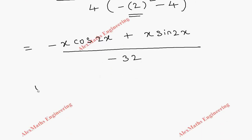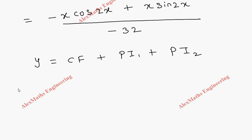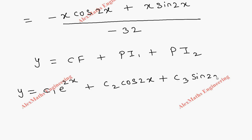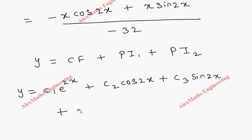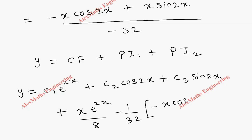Now we combine the complementary function and both particular integrals for the complete solution. The CF is c1 e power 2x plus c2 cos 2x plus c3 sin 2x. PI1 is x e power 2x by 8. PI2 is minus 1 by 32 times bracket open minus x cos 2x plus x sin 2x bracket close. So the complete general solution is y equals CF plus PI1 plus PI2.